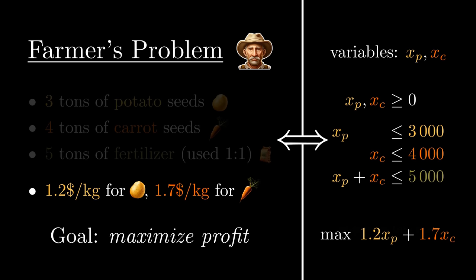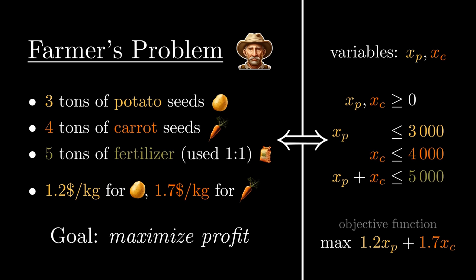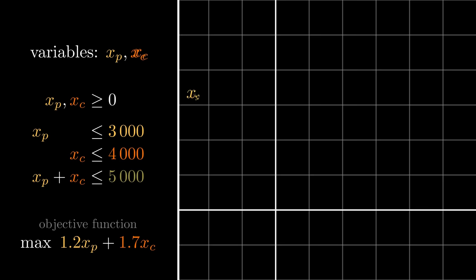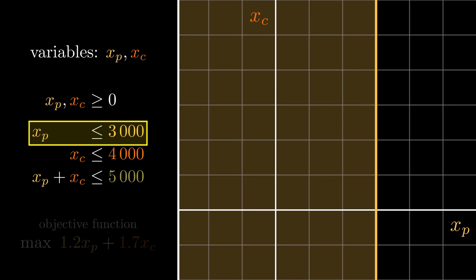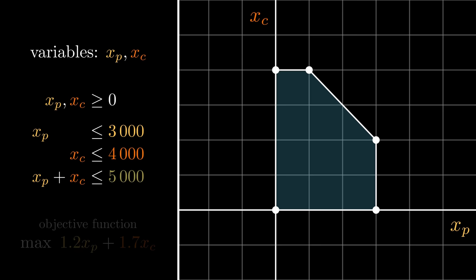Now that the problem is formalized, it might be helpful to visualize it. Since we have two variables, it's probably a good idea to use a plane with one axis for each. To display the inequalities, we can notice that they are all linear, which means that they are just a weight sum of the variables, and each one defines a line with valid values on one side, a half plane to be exact. To satisfy all of the inequalities, we're interested in the intersection of these half planes, which is the following region.